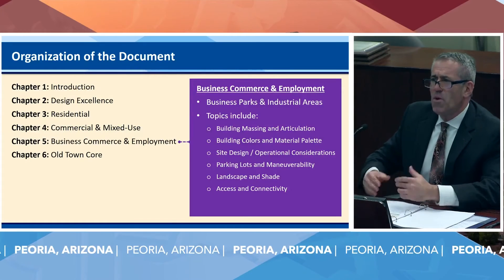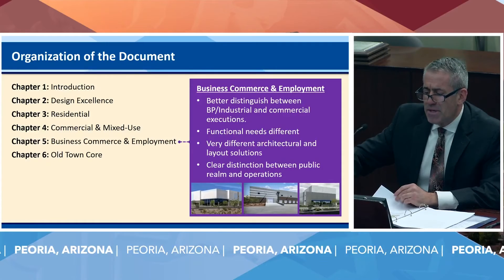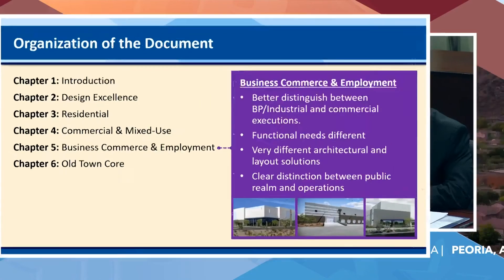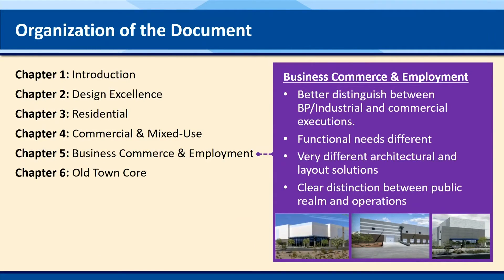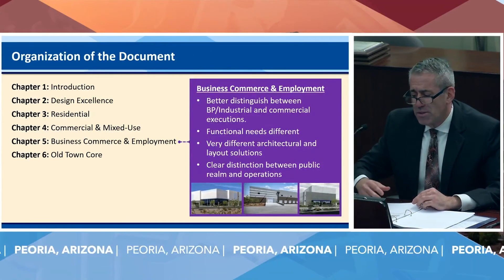The business, commerce, and employment section is really the industrial section. In the past we had difficulty because very specific commercial guidelines don't work well for an industrial execution — asking a developer of a concrete tilt-up building to employ windows and lots of roofline undulation doesn't work for their functional needs. We've employed standards that recognize a clear distinction between the public realm — all areas where the public has access — and the operational areas behind the gates. We need to adjust our standards to apply better to those different needs.